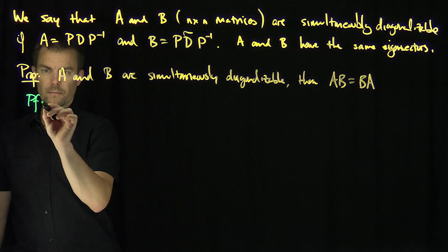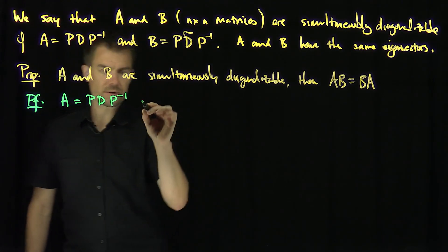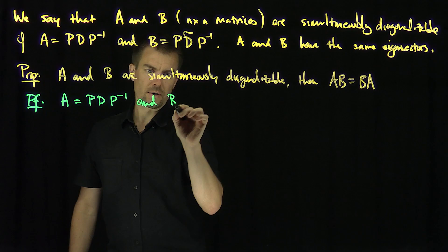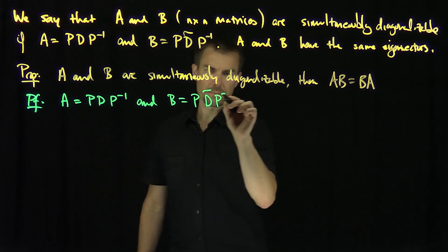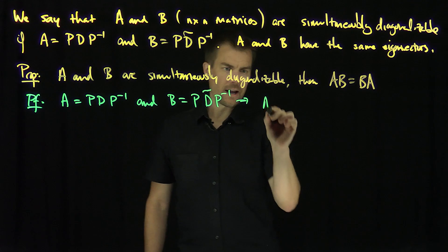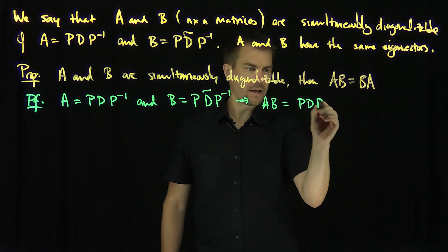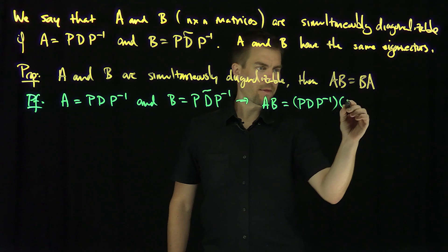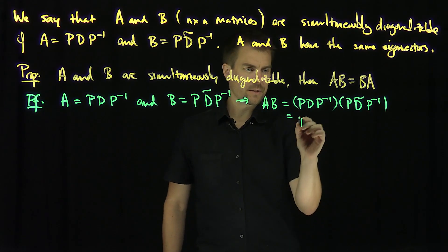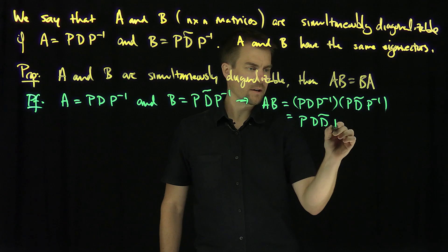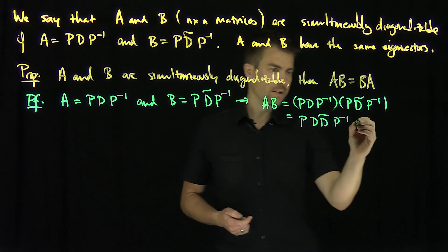We know that A is PDP inverse and B has the same eigenvectors, so B equals PD-tilde P inverse. Therefore AB equals PDP inverse times PD-tilde P inverse. The middle P inverse and P cancel out, giving us PD D-tilde P inverse.